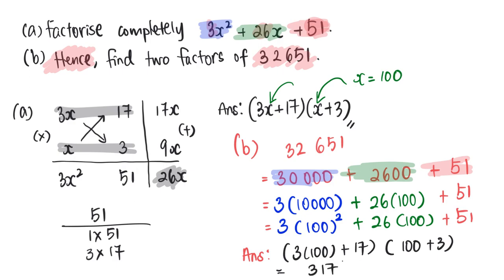So final answer: 317 is one of the factors, 103 is the other factor. That concludes this question. Thank you for watching this video and have a good day.